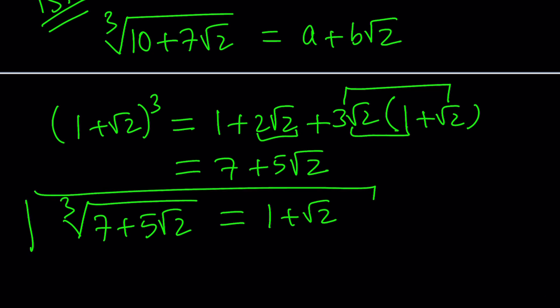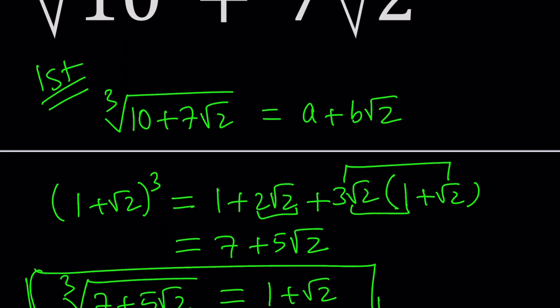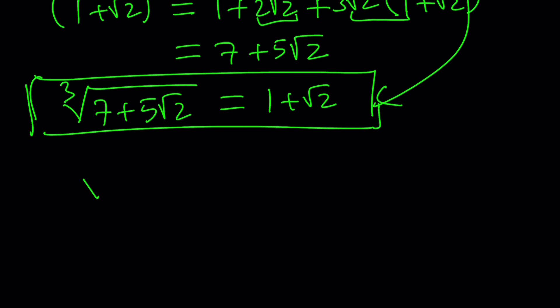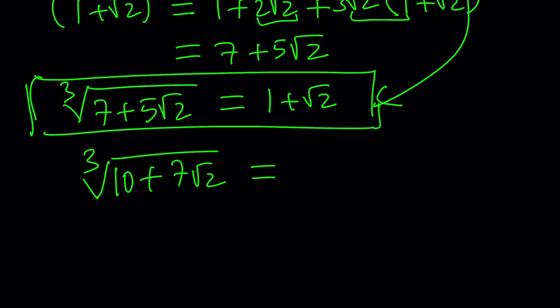So if the problem were finding the cube root of 7 + 5√2, the answer would be 1 + √2, where a = 1 and b = 1. That's the form a + b√2 with positive integers. The question is: can we find integers a and b such that when we cube we get 10 + 7√2? It can also be written a√2 + b — same idea with a plus sign.